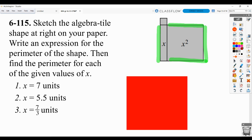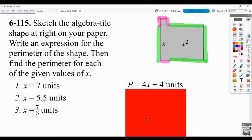And then these lengths are all 1. So this is 1, 1, 1, and 1. So the perimeter then would be 4x plus 4, and of course the label is units.